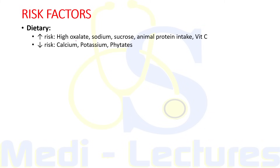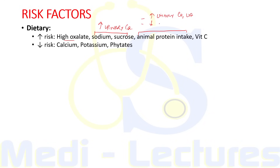High oxalate is found in potato, legumes, and dry fruits. High sodium and sucrose increase urinary calcium excretion, predisposing the patient to calcium oxalate and phosphate stones. Increased animal protein intake increases urinary calcium as well as uric acid, and at the same time decreases urinary citrate which prevents crystallization and stone formation. Similarly, excessive vitamin C intake can also increase oxalate levels.